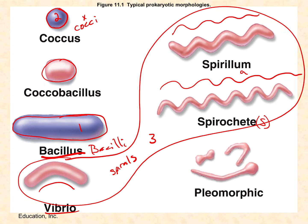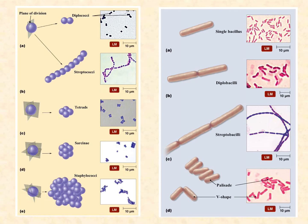Now the cocci and the bacilli can form arrangements — naturally occurring clusters — that you don't see among the spirals. Spirals always finish a round of binary fission and separate from each other; the cocci and bacilli don't always do that. If they're genetically programmed to not let go of each other at the end of binary fission, then they're going to exist as diplococci. For example, Streptococcus pneumoniae generally exists as singles or diplococci. So when we suspect someone has a pneumococcal pneumonia, we take a sputum sample, look at it under a microscope, and if we see a predominance of diplococci, there's a good chance we were spot on.